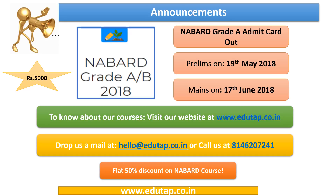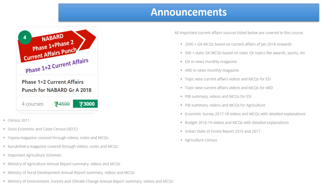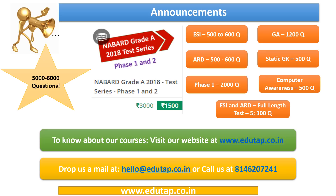Currently we are providing a comprehensive NABARD Grade A 2018 course for a discounted price of Rs. 5000. To know more about our courses, you can visit our website www.edutab.co.in. We are also providing a NABARD Phase 1 plus Phase 2 Current Affairs Punch course at a discounted price of Rs. 3000, covering all important current affairs for NABARD Grade A 2018. We have also recently launched a test series for NABARD Grade A 2018 Phase 1 plus Phase 2, with nearly 5000 to 6000 MCQs. You can drop us a mail at hello@edutab.co.in or call us at 814-620-7241.